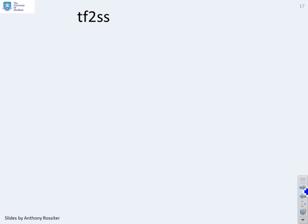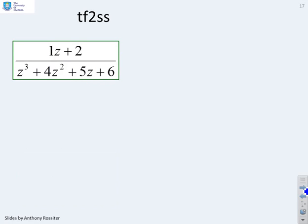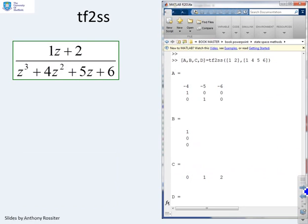For tf2ss, here is an example written in terms of powers of Z. A transfer function with numerator coefficients [1, 2] and denominator coefficients [1, 4, 5, 6] is entered directly, and MATLAB generates the A, B, C, D matrices. Make sure to use powers of Z to avoid mistakes.